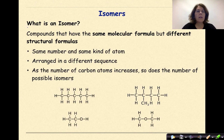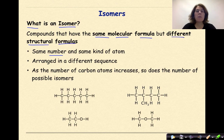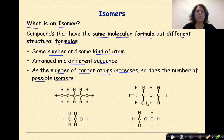So what is an isomer? Compounds that have the same molecular formula, but different structural formulas. So they have the same number and the same kind of atoms, but they are arranged in a different sequence. As the number of carbon atoms increases, so does the number of possible isomers.